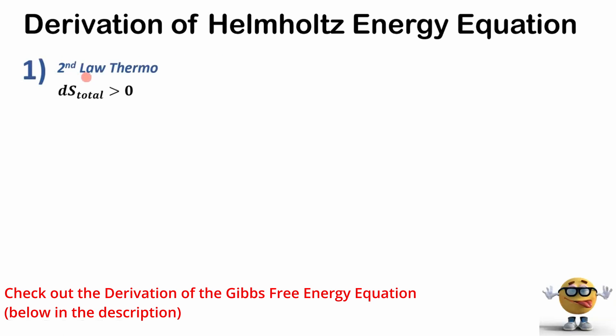First thing we're going to do is start off with one of my favorite laws, which is the second law of thermodynamics. It says that the total entropy change, in differential form, has to be greater than zero. The total entropy change is comprised of the change in the entropy of the surroundings plus the system, and that has to be greater than zero for the process to be spontaneous.